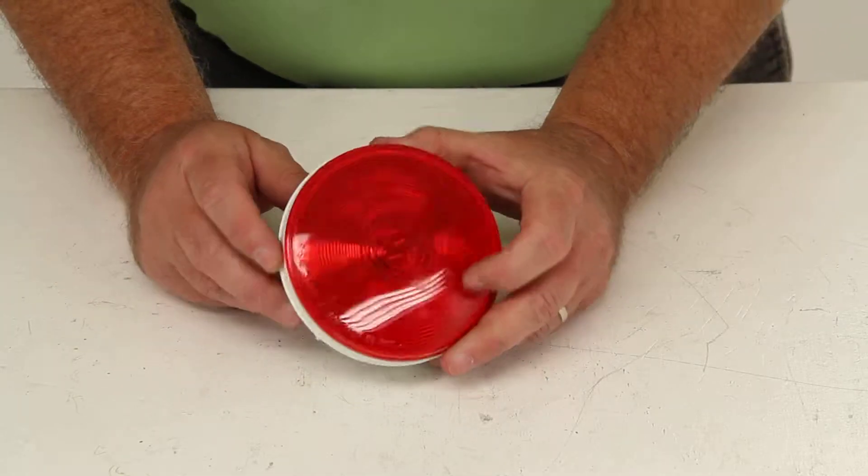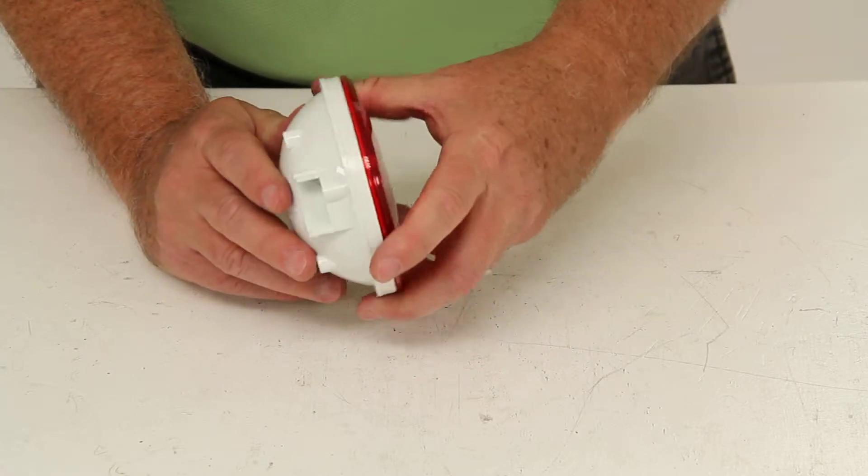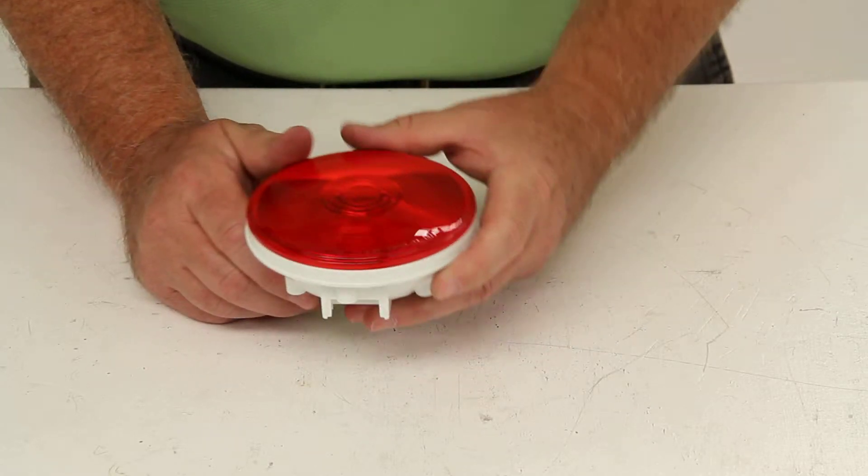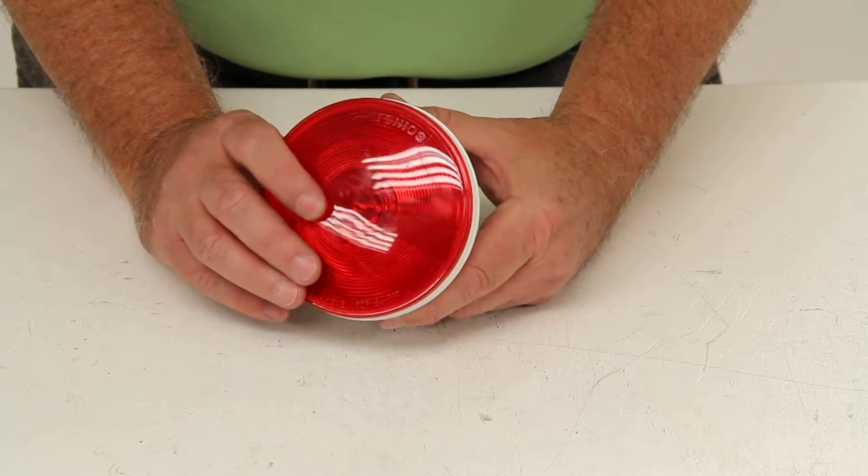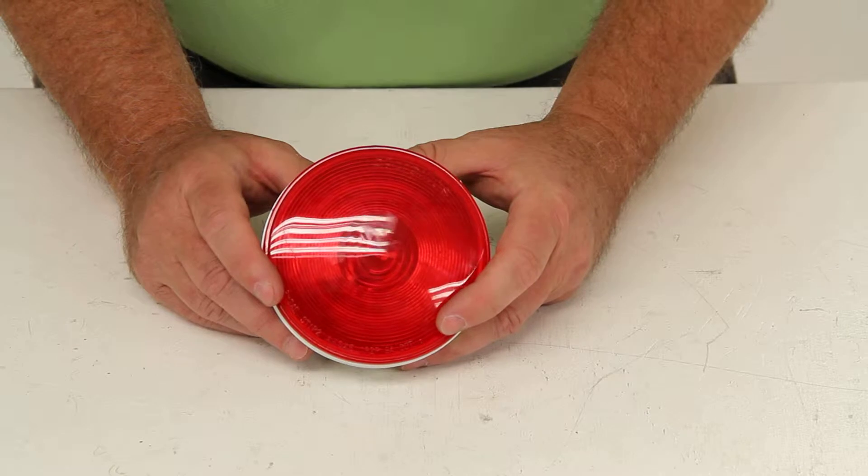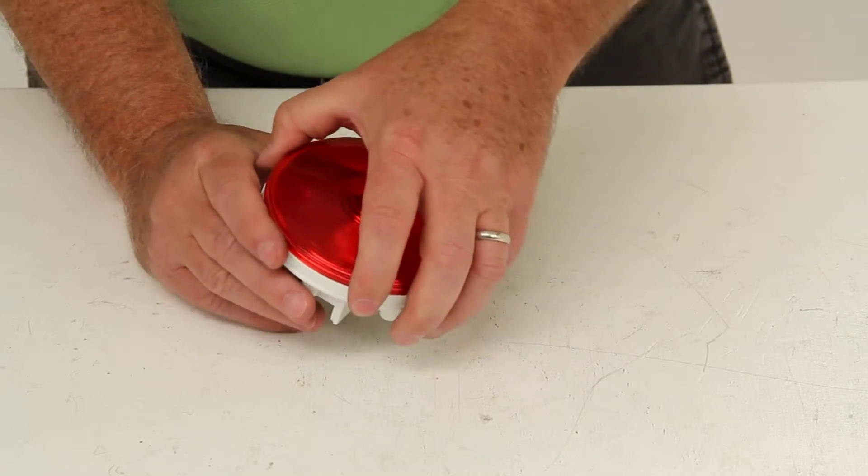The lens and the housing are one unit. It is sonically sealed and waterproof. This will provide protection to the heavy-duty, long-life incandescent bulb inside. The light does feature a shock-proof socket, which will guarantee long bulb life.